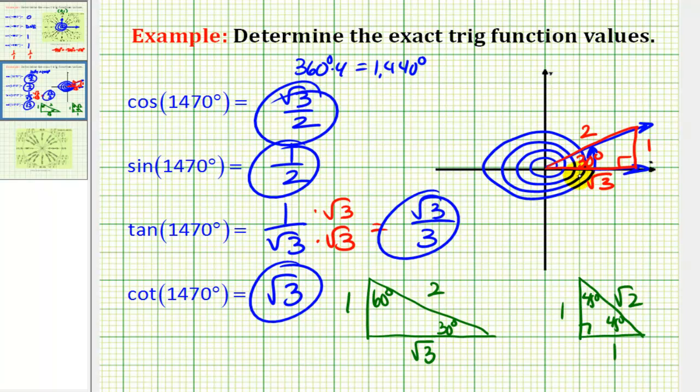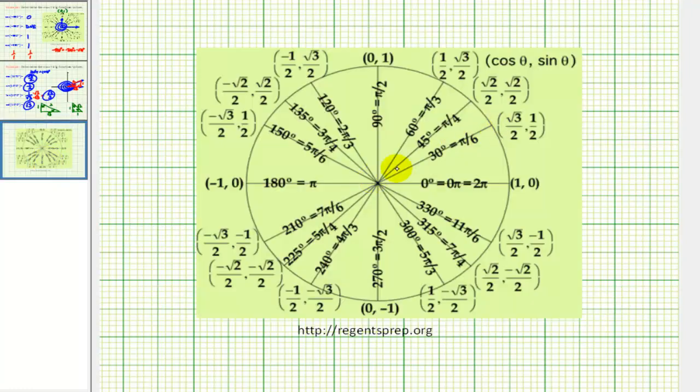Of course, if we wanted to, we could verify this on the unit circle. Here's where the terminal side would intersect the unit circle. Cosine theta was equal to square root of 3 over 2. Sine theta was equal to 1 half. And to verify tangent and cotangent, we would have to simplify y over x and x over y.